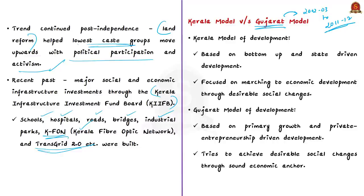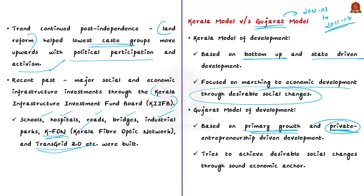Both models are entirely dissimilar in terms of approach to development. The Kerala model focused on marching to economic development through desirable social changes, while the Gujarat model tries to achieve desirable social changes through a sound economic anchor. Let us compare the developments in these two states across different sectors.